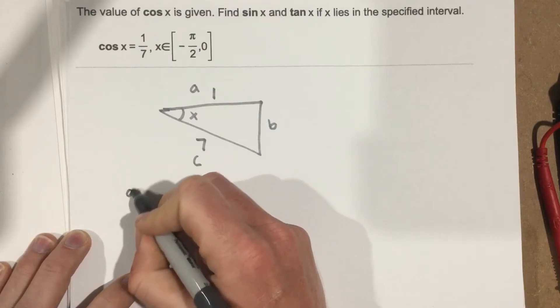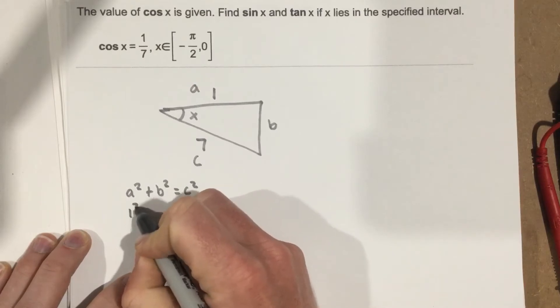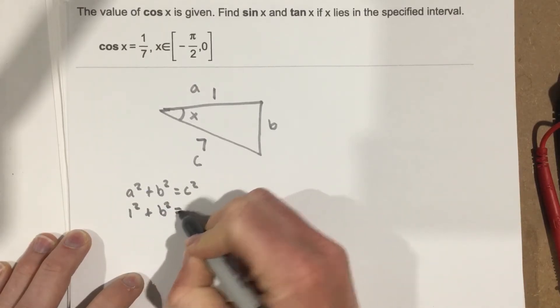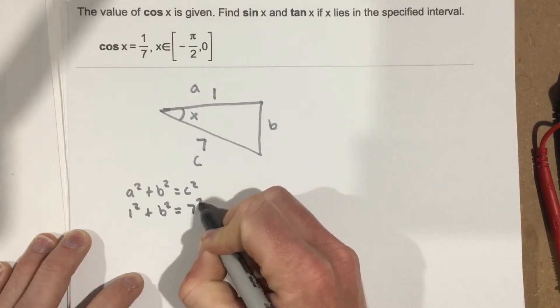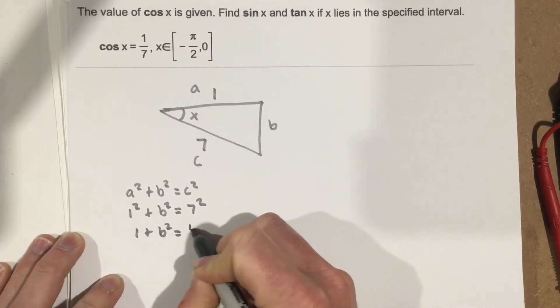A squared plus B squared equals C squared. So 1 squared plus B squared equals 7 squared.